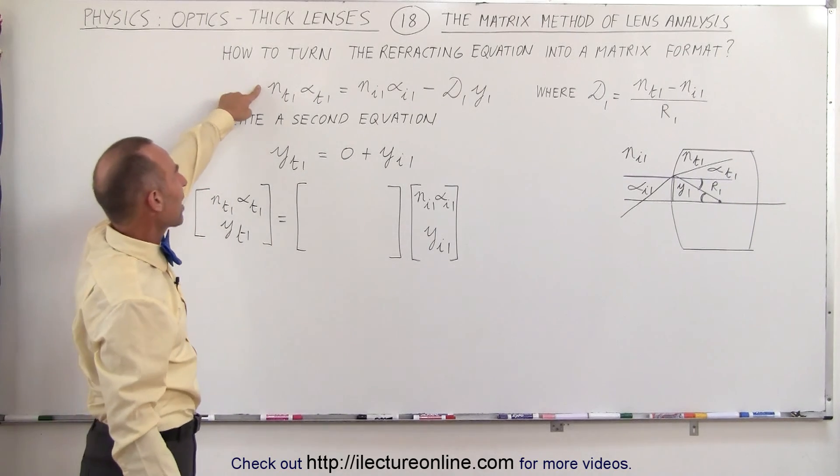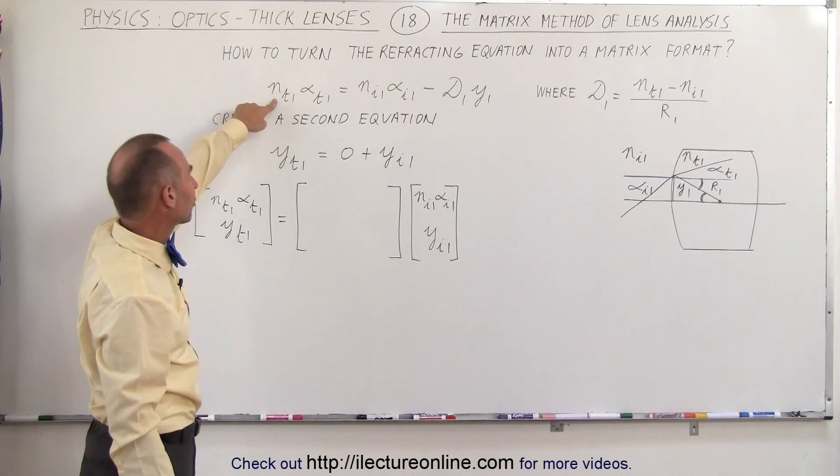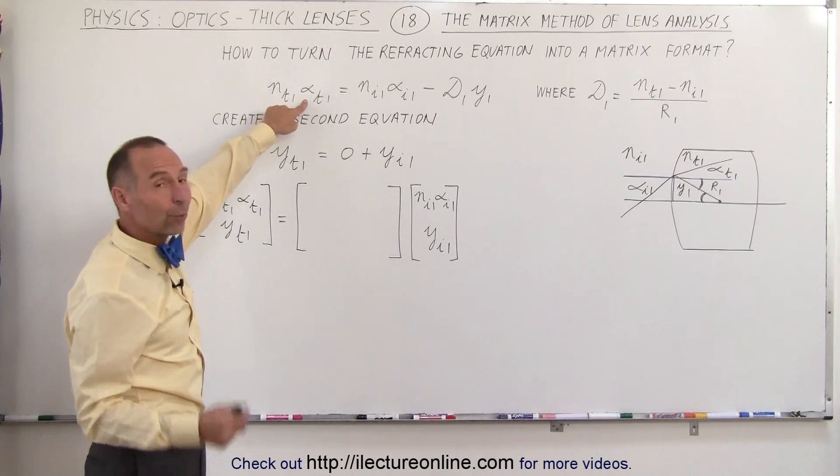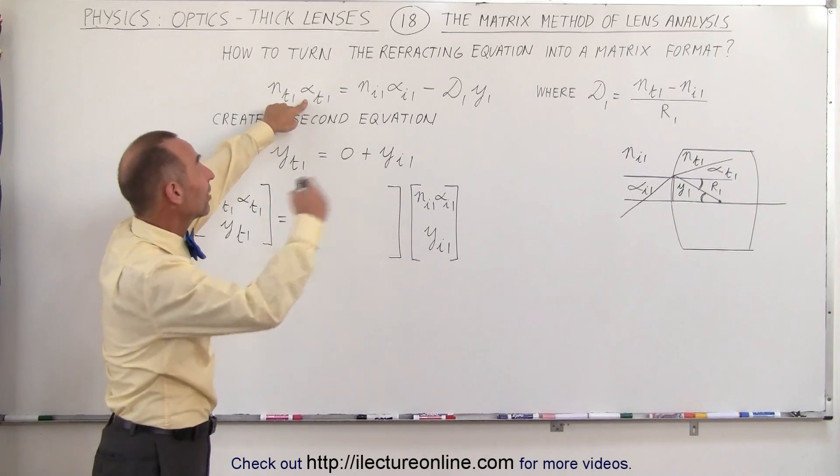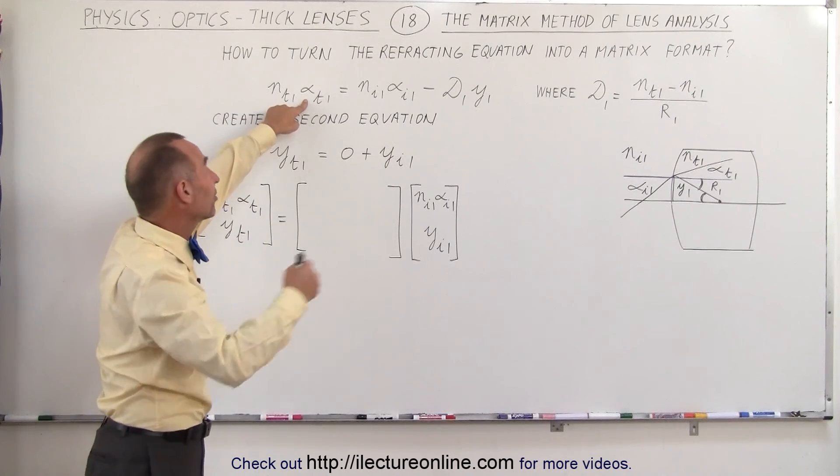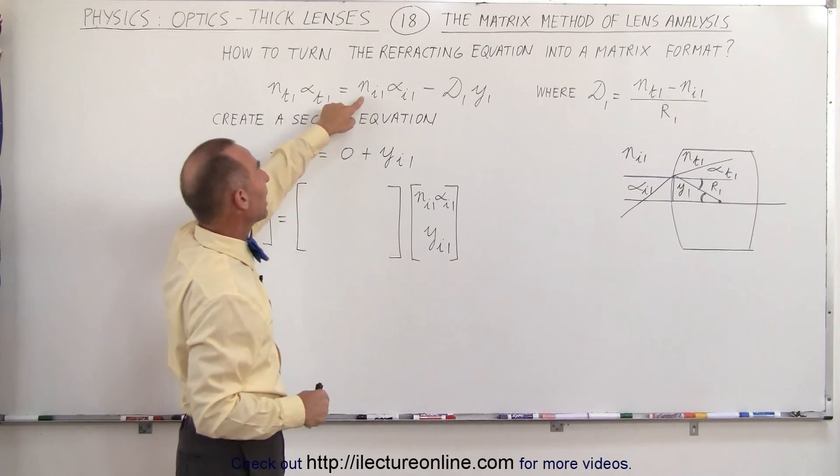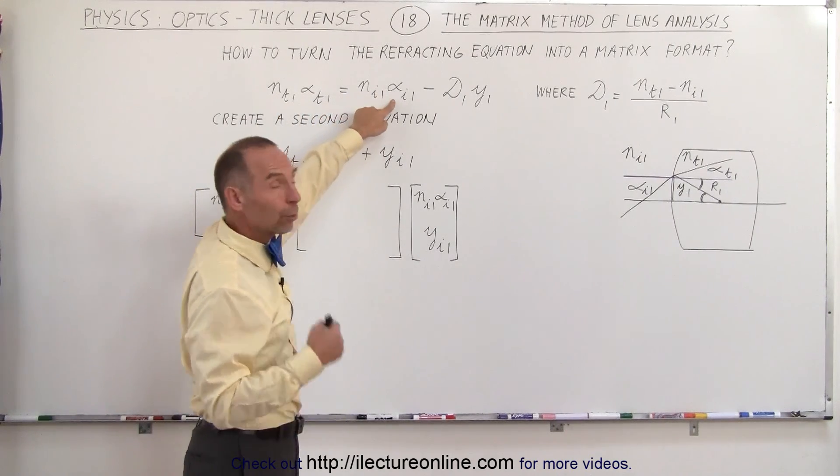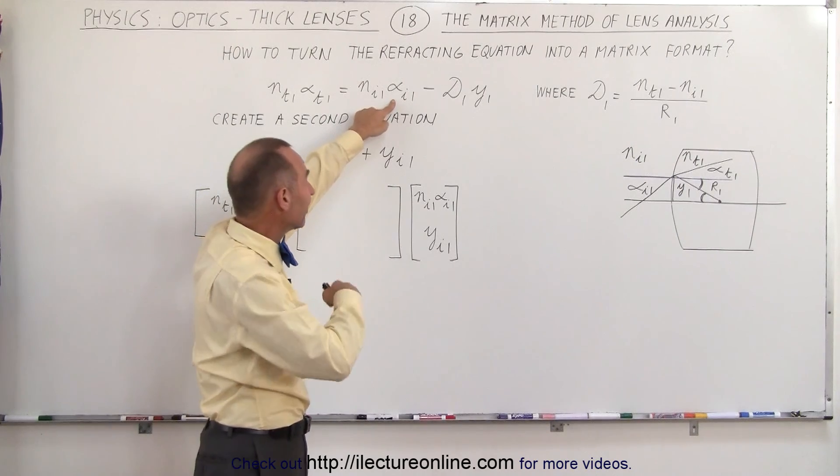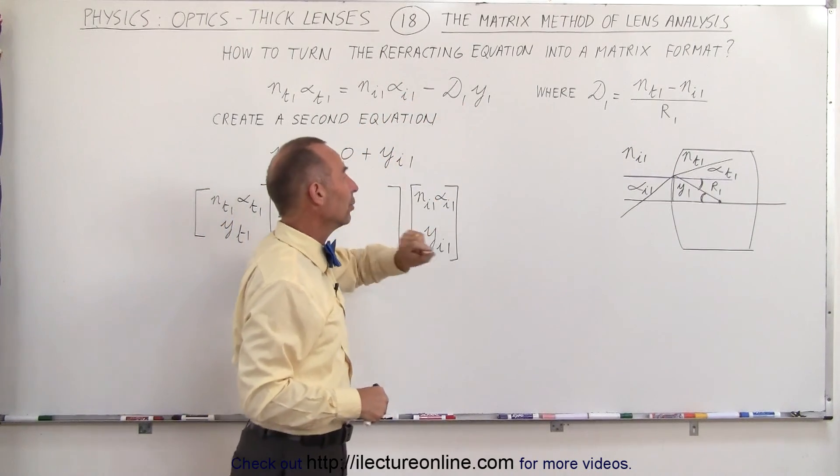Here we have the familiar refracting equation which tells you that the index of refraction in the angle relative to the horizontal on the other side of the boundary on the transmitted side of the ray equals the index of refraction in the angle relative to the horizontal on the incident side minus d1 times y1.